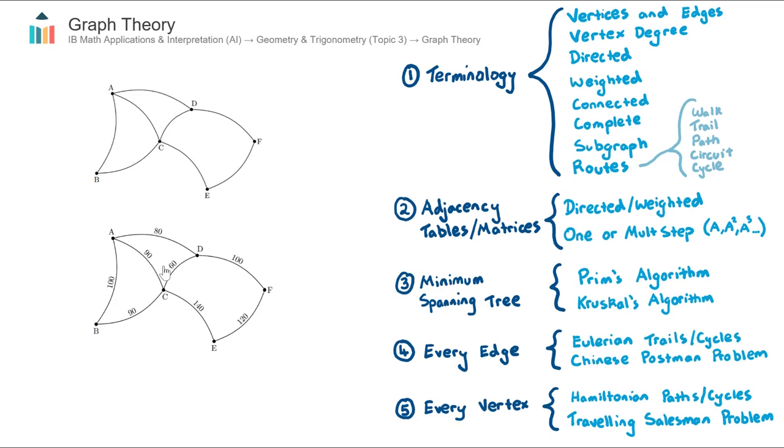Complete graphs, neither of these two graphs here are complete. What defines a complete graph is that you can traverse to every other vertex in one step, in one direct route. Here, you can't actually travel from B to F in one direct route. You would need to go through C and E and F, whereas a complete graph might look like this. From any vertex, you can travel to every other vertex on the graph in one go.